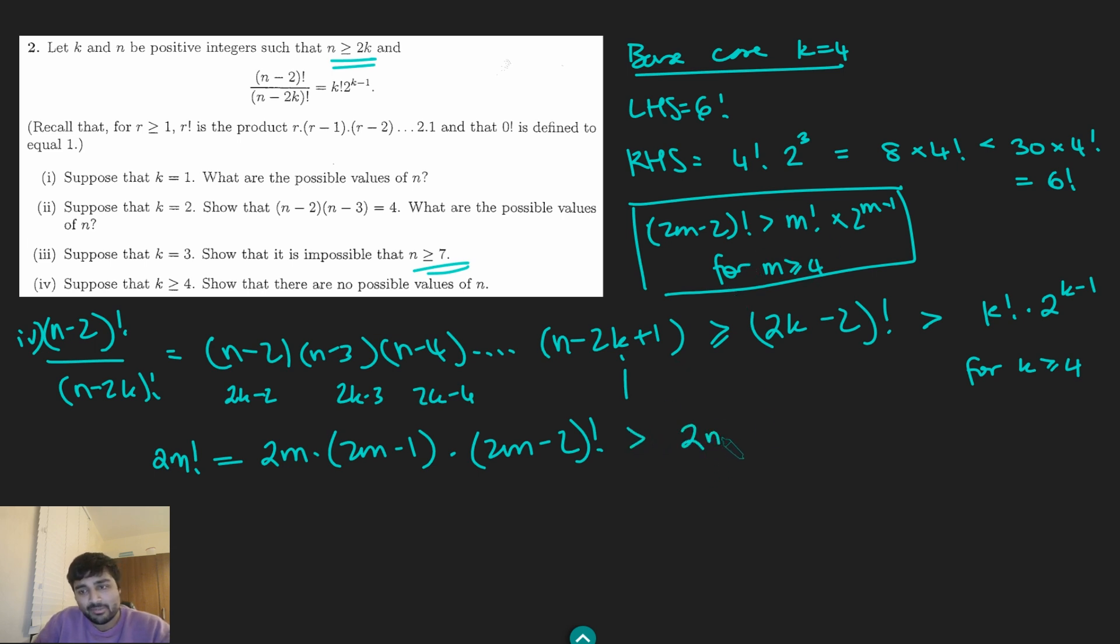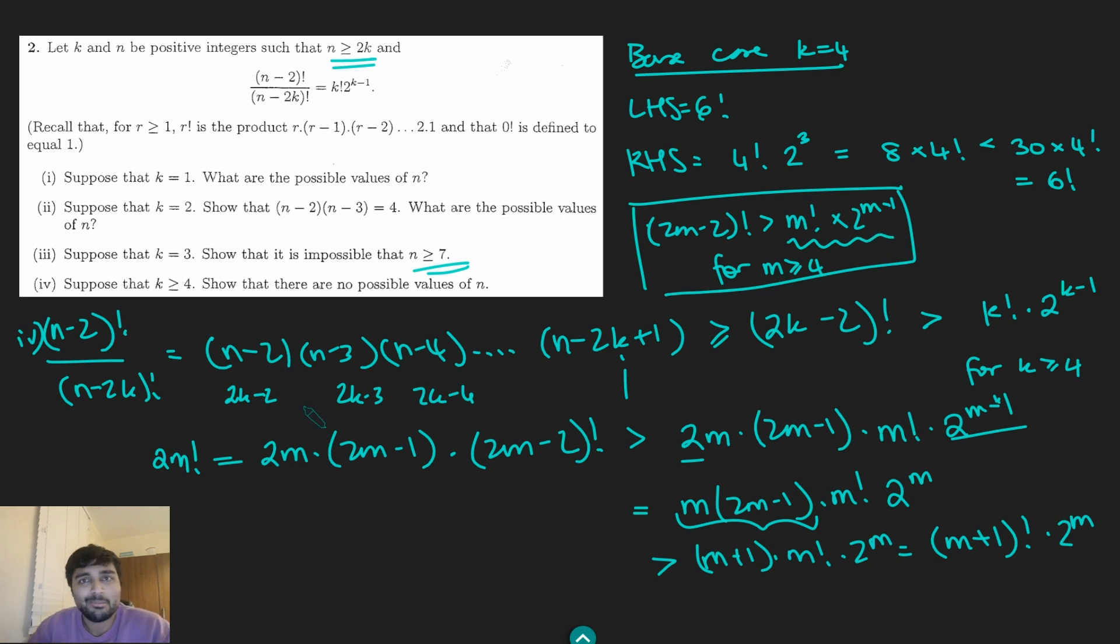But that there, using my assumption, is bigger than 2m times (2m - 1) times m! times 2 to the m minus 1. If I use that 2 and bring it along there, that's the same as m times (2m - 1) times m! times 2 to the m. And now this guy here is clearly going to be bigger than m + 1. Well, why is that? Well, 2m - 1, since m is at least 4, 2m - 1 is at least 7. So this is at least 7m, which is definitely going to be bigger than m + 1. So this is going to be bigger than (m + 1) times m! times 2 to the m, which is (m + 1)! times 2 to the m, which is this right-hand side except m replaced with m + 1.